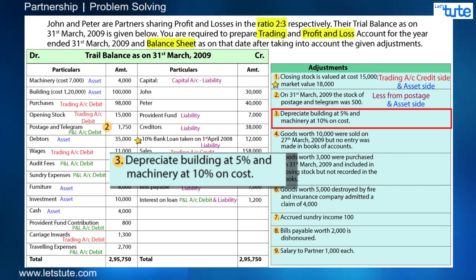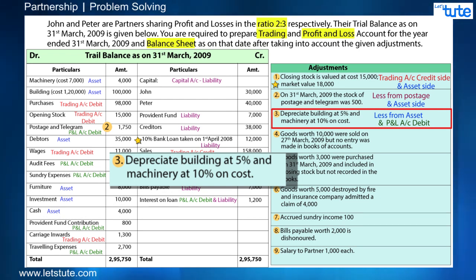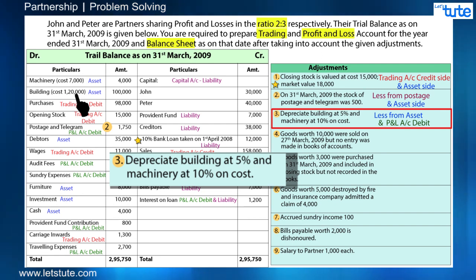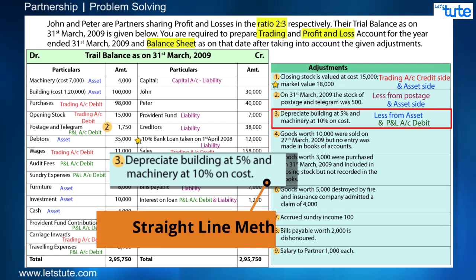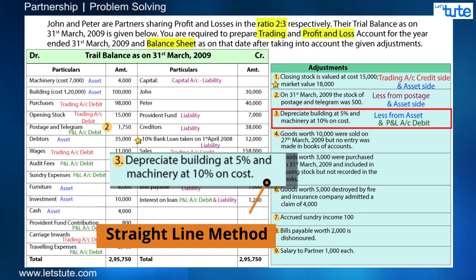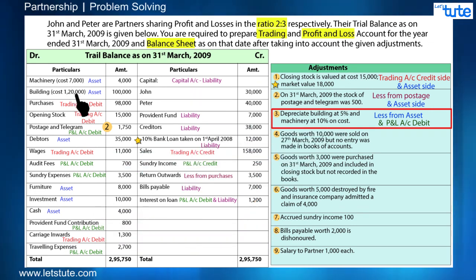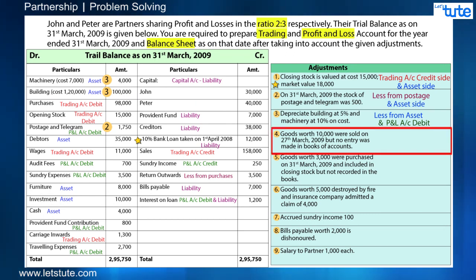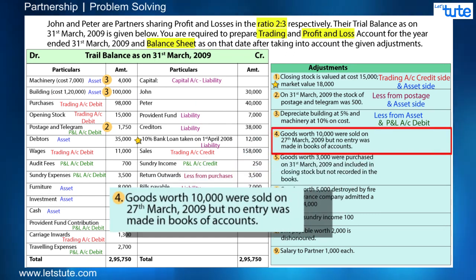One thing to note: we have been provided the cost of the assets, which indicates the straight-line method of calculating depreciation. So we will calculate depreciation on the cost mentioned in the given question. Then, fourth adjustment: goods worth 10,000 were sold on 27th March 2009 but no entry was made in the books of accounts.